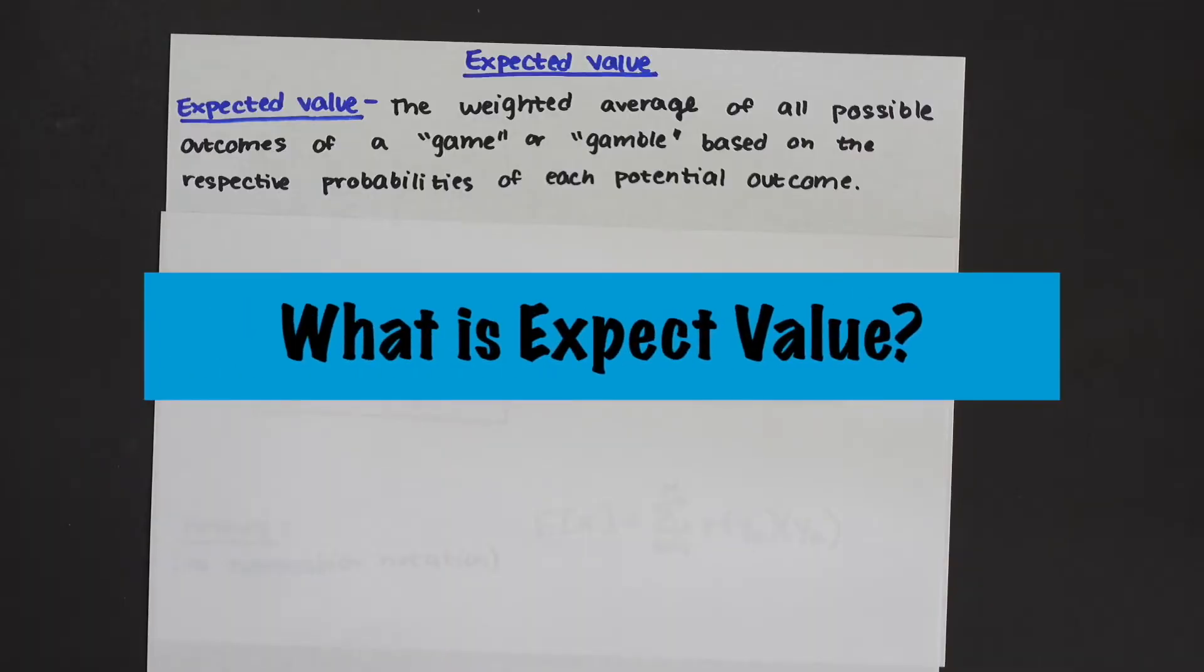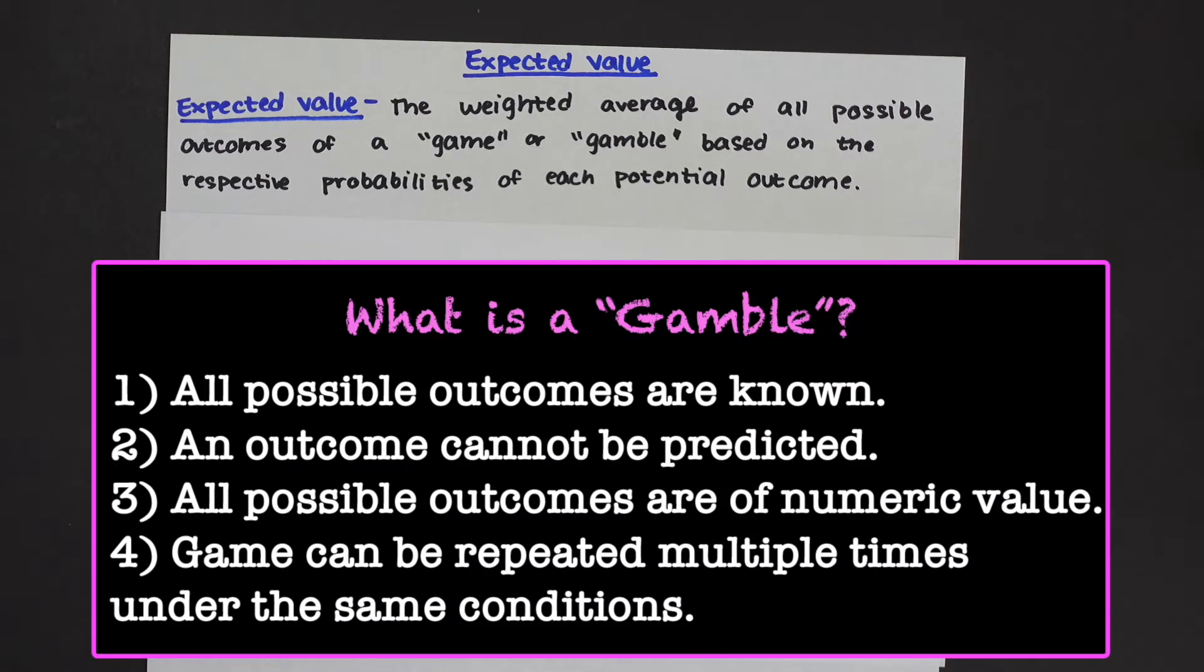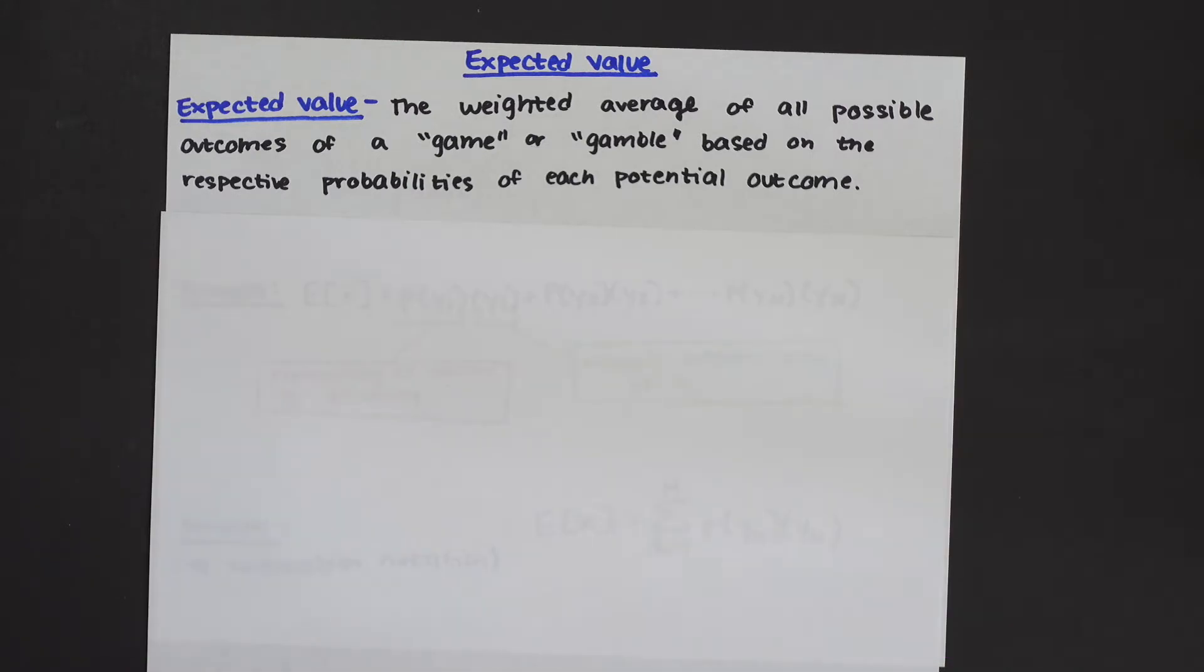So what is expected value? It is the weighted average of all possible outcomes of a single game or gamble based on the expected probabilities of each potential outcome. So if this doesn't make any sense don't worry, we're gonna look at examples and all this will come together.